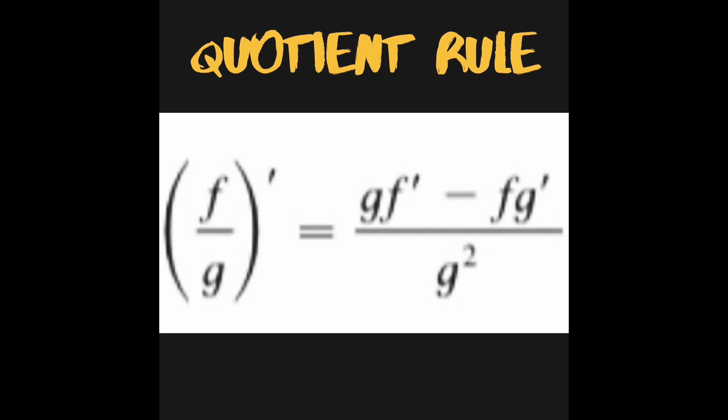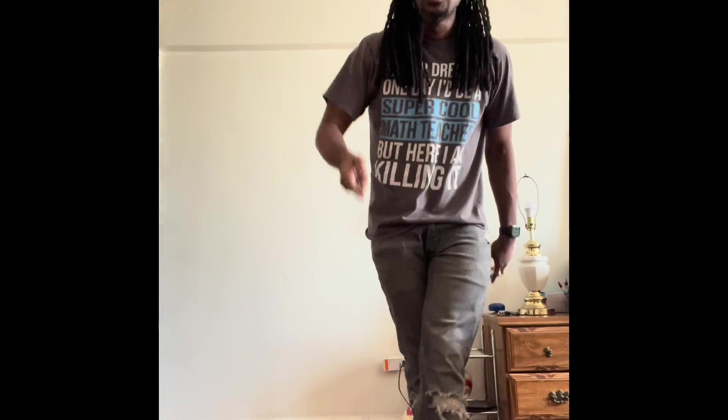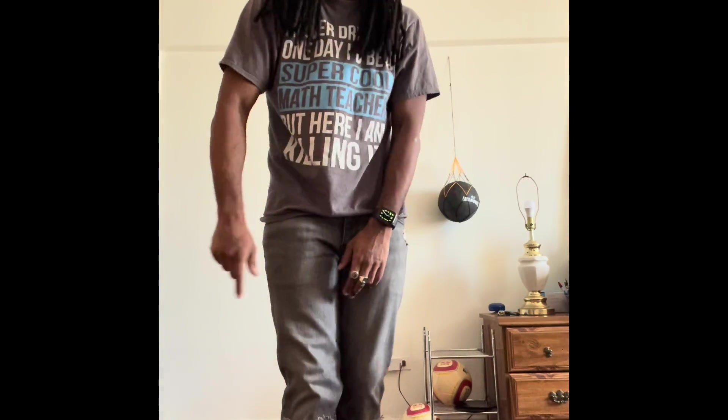Derivative of f over g is g times derivative of f minus f times derivative of g, all over g squared. Functions f and g, d stands for derivative of. Derivative of f over g is g times derivative of f minus f times derivative of g, all over g squared. Wow!